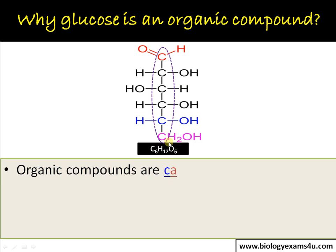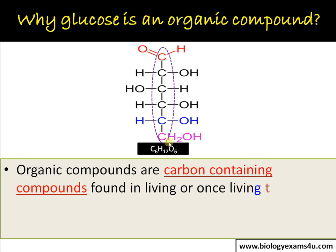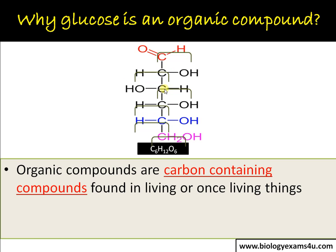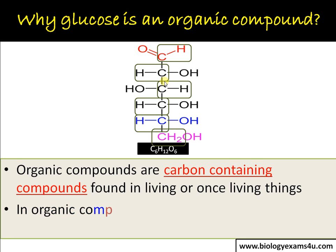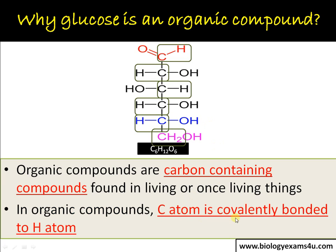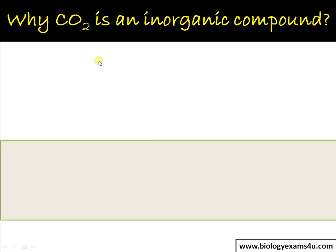In glucose there are six carbon atoms. Organic compounds are carbon-containing compounds found in living or once-living things. The second criteria for becoming an organic compound is that these carbon atoms should be bonded to a hydrogen atom. The bond normally formed is a covalent bond. The carbon atom is covalently bonded to a hydrogen atom. This makes glucose an organic compound.